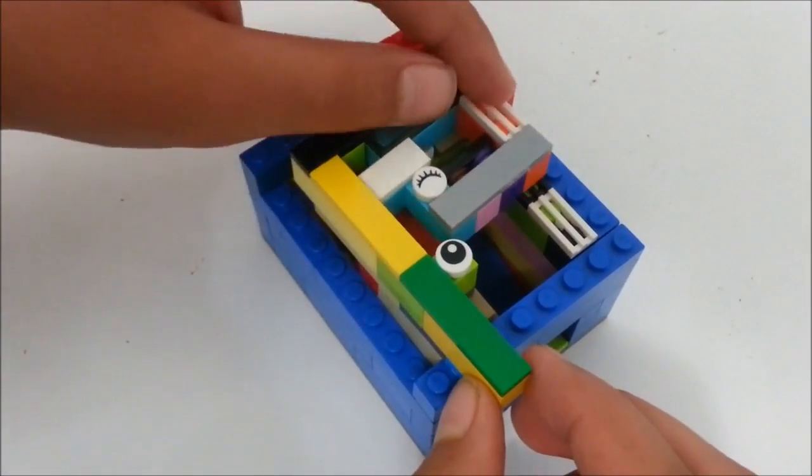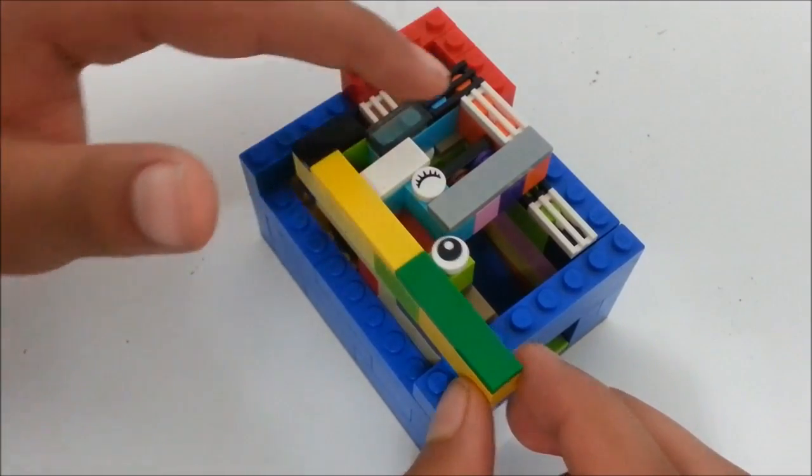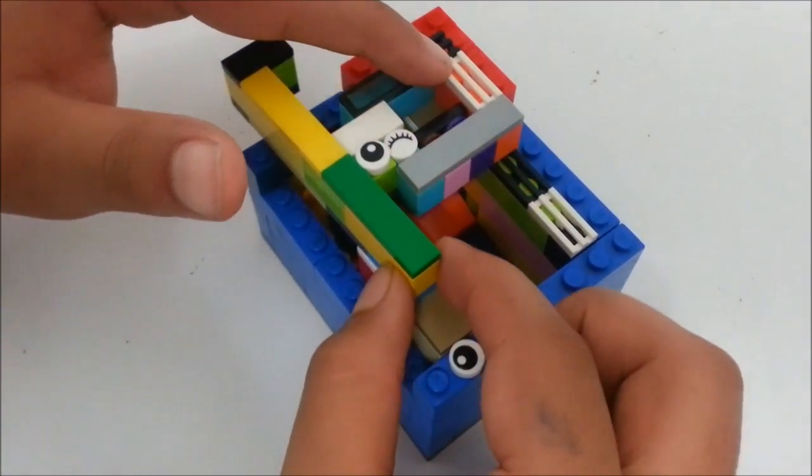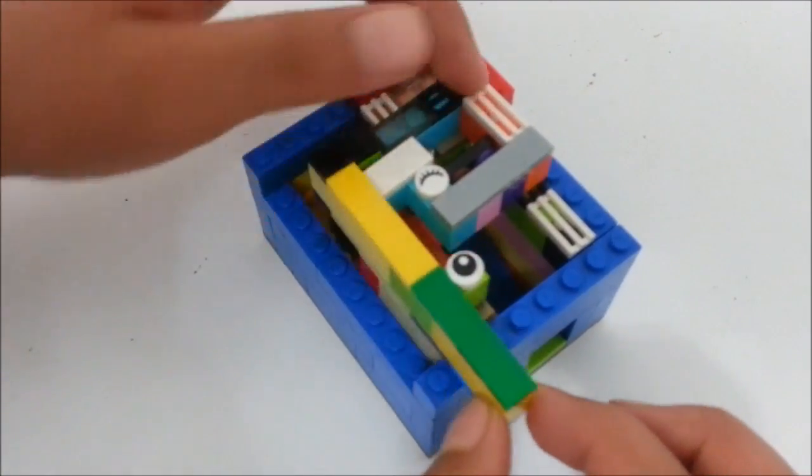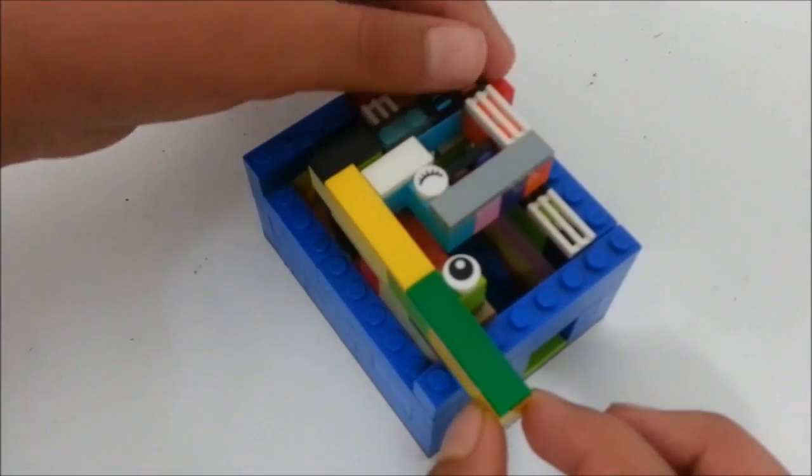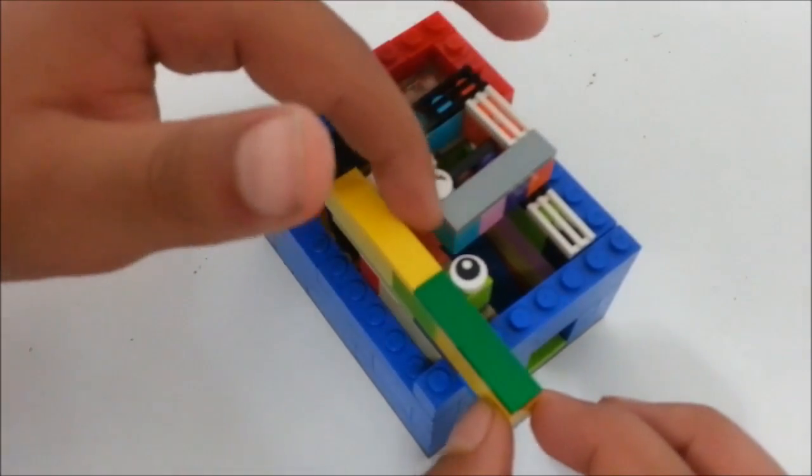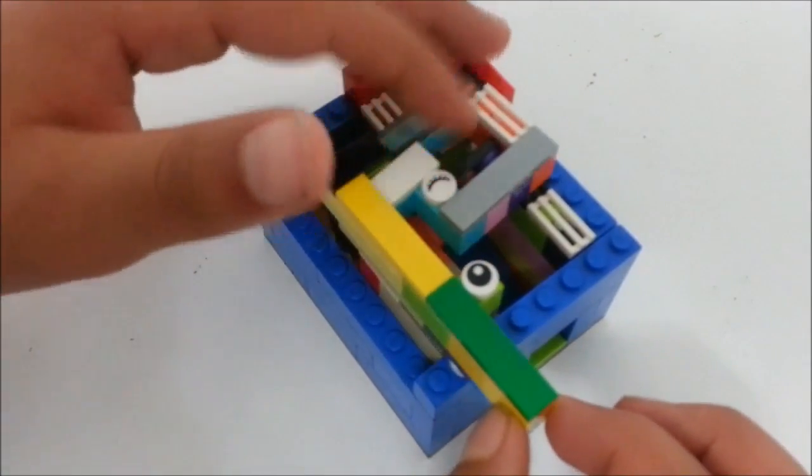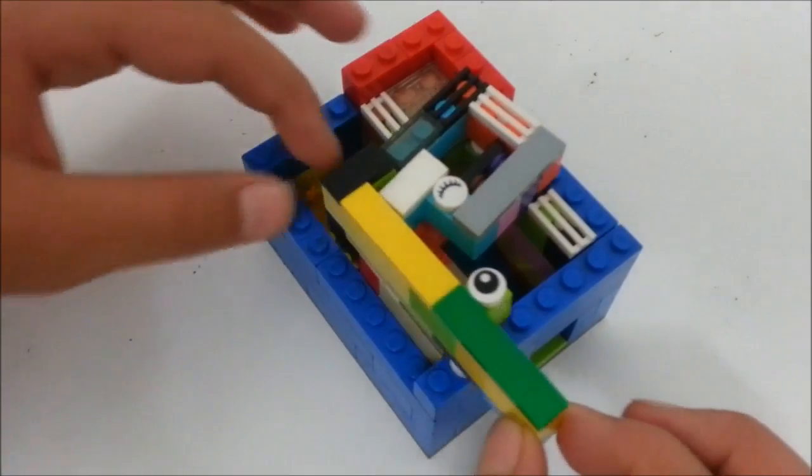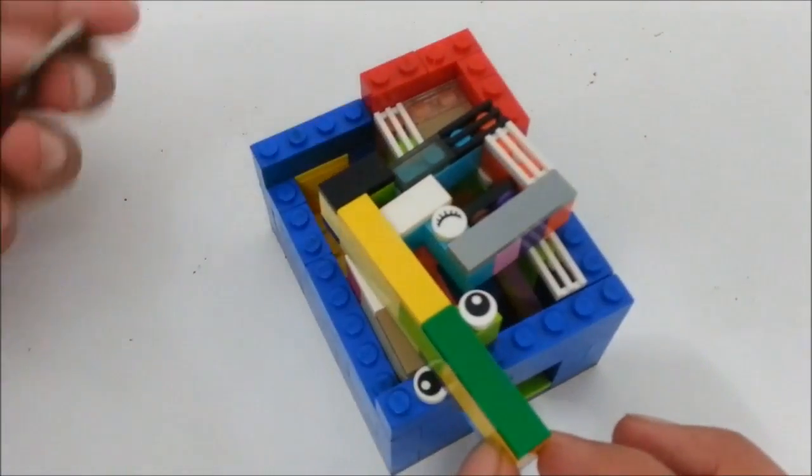See, this white piece cannot move the dispensing piece. It really can't because it can't reach till here. It can only reach till here. So you need something in between to push the dispensing piece. Namely, you need a coin actually.